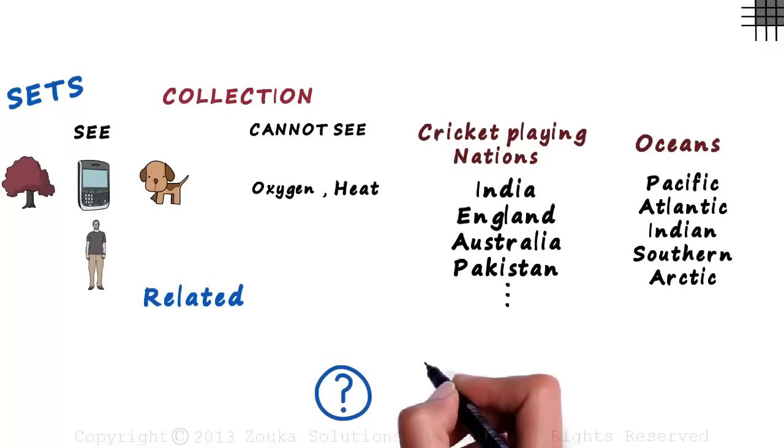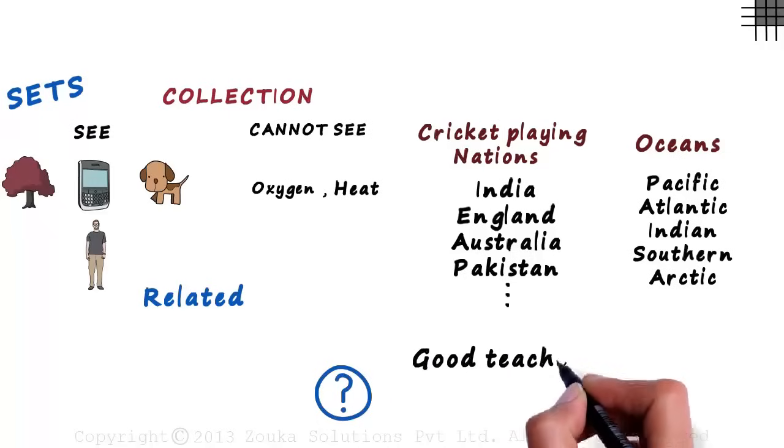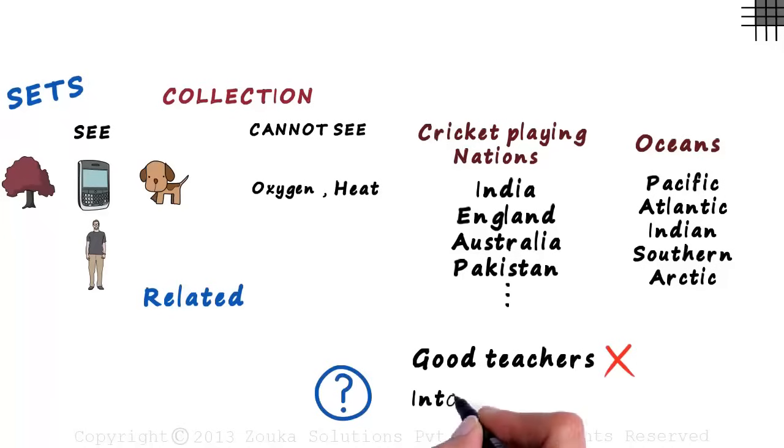What if we were asked to make a list of the good teachers we know? We cannot make a set here, because my idea of a good tutor may be completely different from yours. Similarly, we cannot make a list of intelligent students we know. The word intelligent is not well defined.